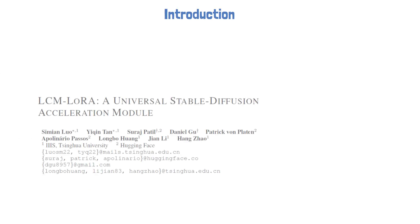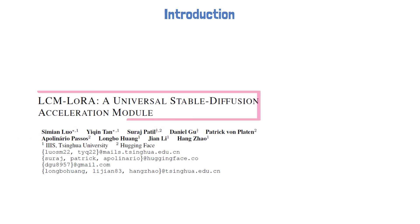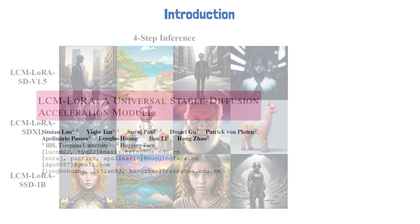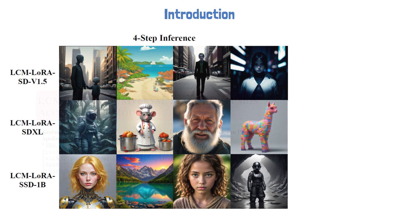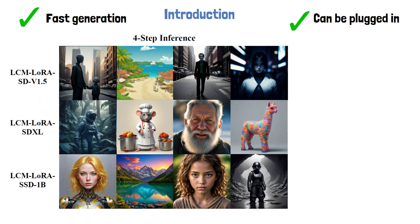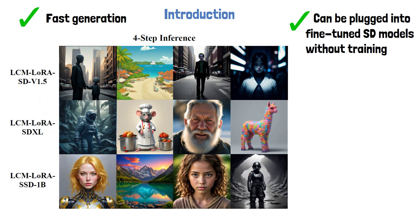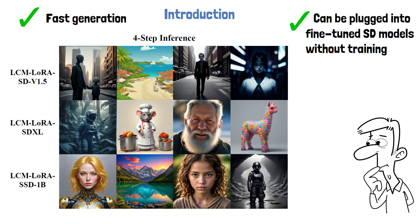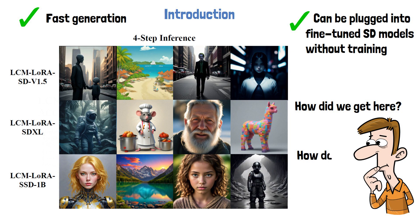Last week a new research paper was released titled LCM LoRA, a Universal Stable Diffusion Acceleration Module, which presents a method to generate high quality images with large text-to-image generation models such as SDXL, but doing so dramatically faster. Not only can it run SDXL much faster, it can also do so for fine-tuned SDXL — say for a specific style — without going through another training process. In this video we'll review the journey from Diffusion Models up until now to understand how we got here, and then explain what's new with LCM LoRA that made this acceleration possible.